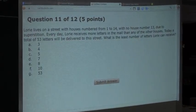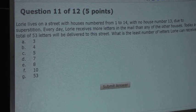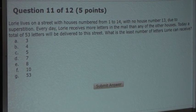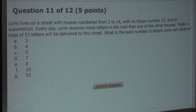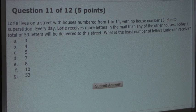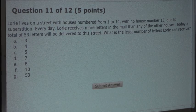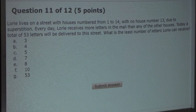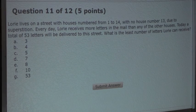Lori lives on a street with houses numbered from 1 to 14, with no house number 13, due to superstition. Every day, Lori receives more letters in the mail than any of the other houses. Today, a total of 53 letters will be delivered to the street. What is the least number of letters that Lori can receive?